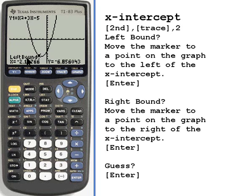At the bottom of the screen it says left bound, and I've got this little blinking marker. What the calculator wants to know is where is some place to the left of what I'm looking for. Well, I'm looking for this spot here, so I'm going to use the left arrow button to move over to the left of that spot. When it's where I want it, I press enter.